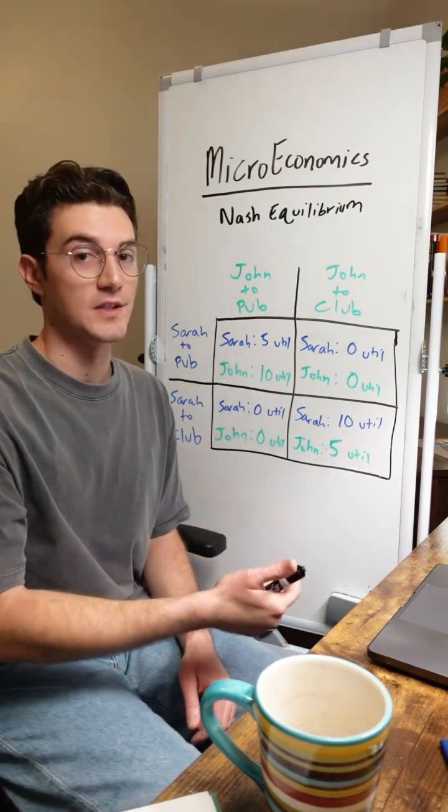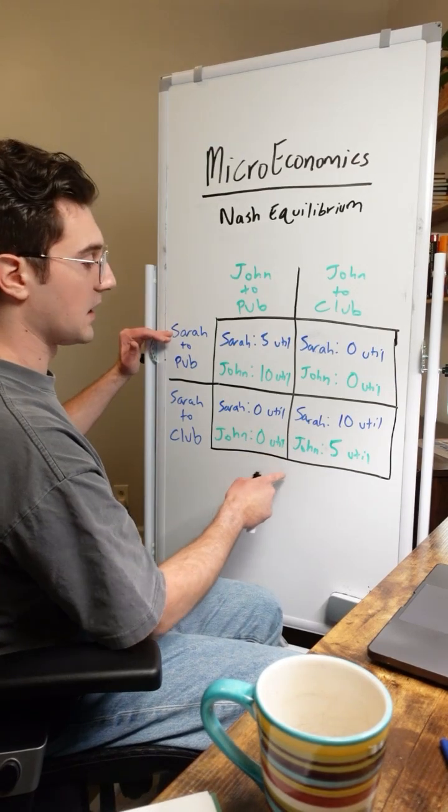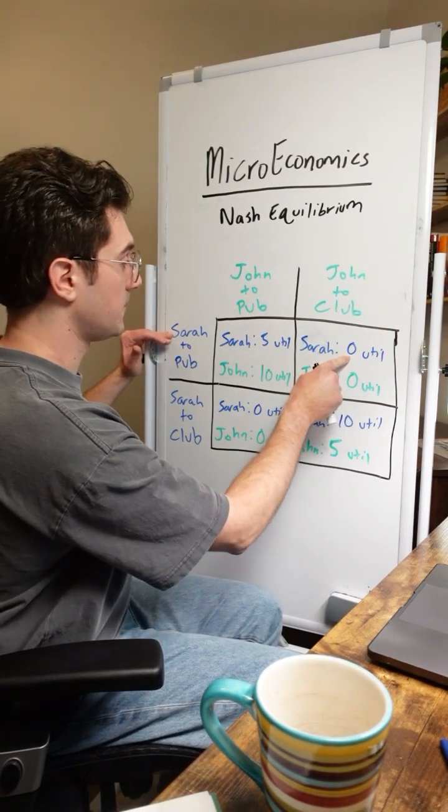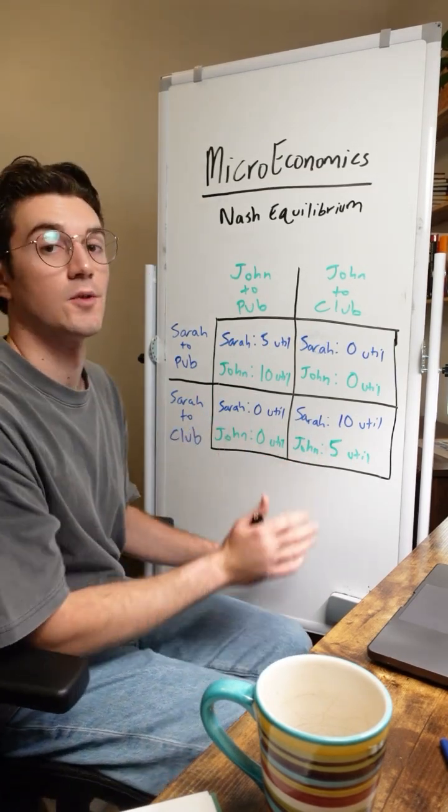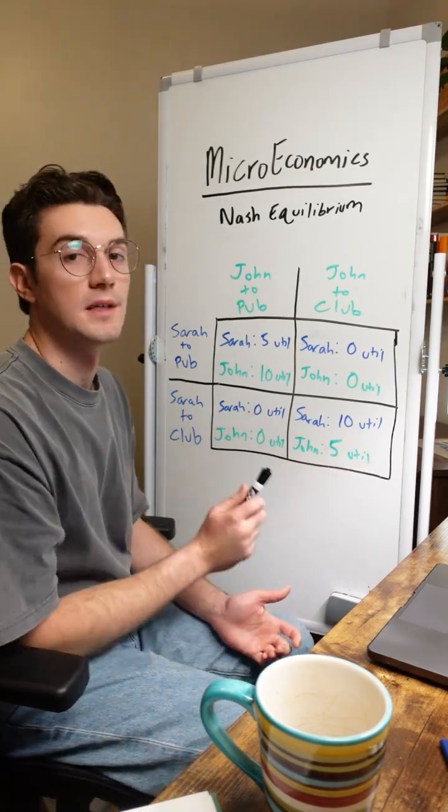This one is too, for the exact same reasons but flipped. If Sarah decides to go to the pub, she goes from 10 utility to 0, so she's not going to do that. If John goes to the pub, he goes from 5 utility to 0, so he's also not going to do that. And this cell too is a Nash equilibrium.